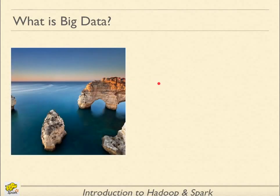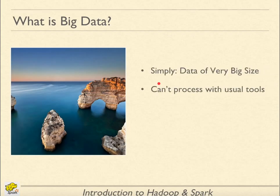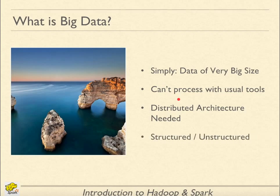What is big data? In very simple words, big data is data of very big size which cannot be processed with usual tools. And to process such data, we need distributed computing. This data could be structured or unstructured.